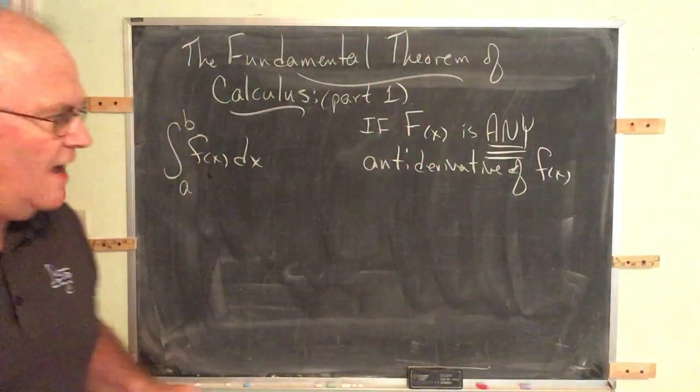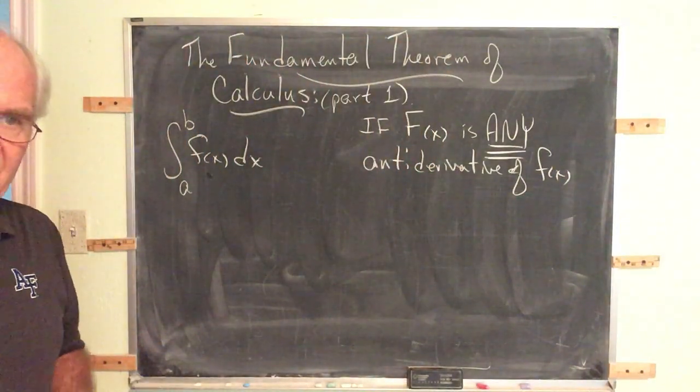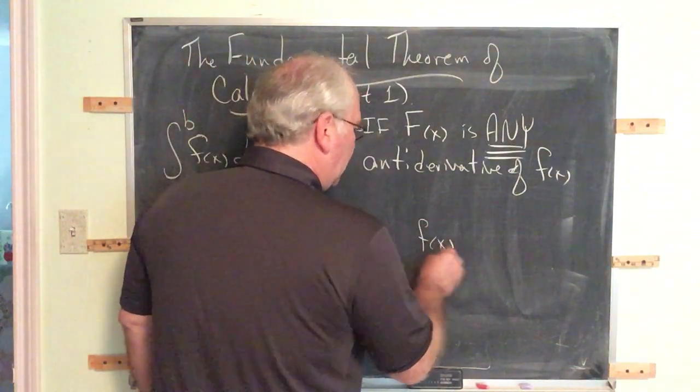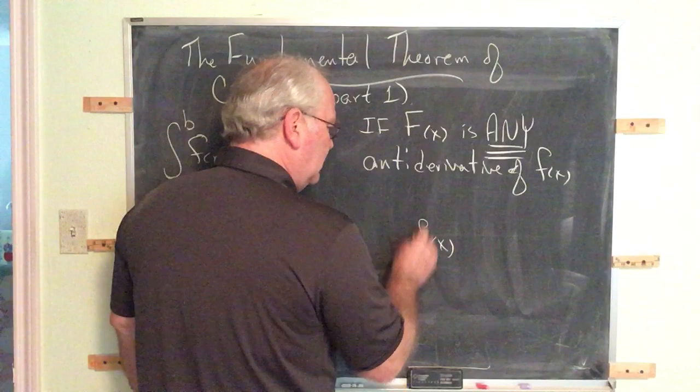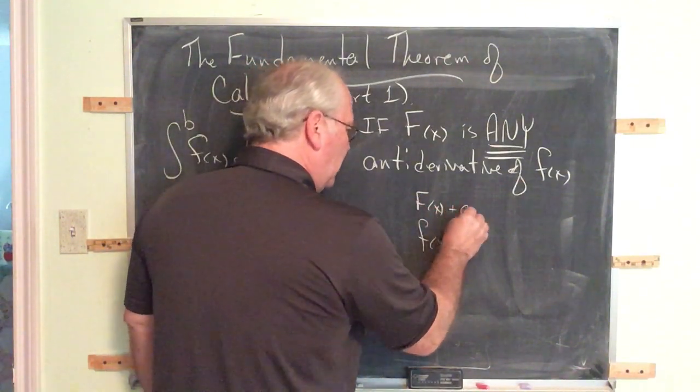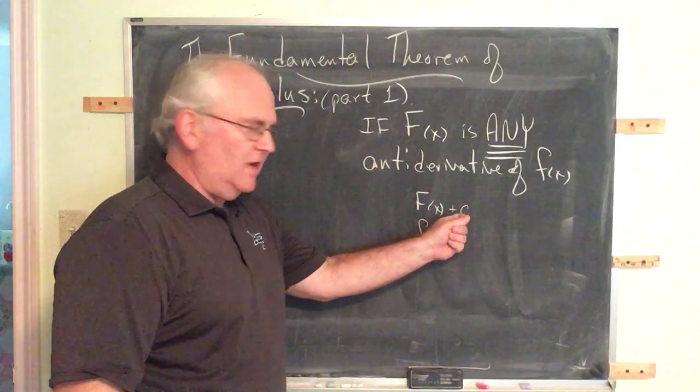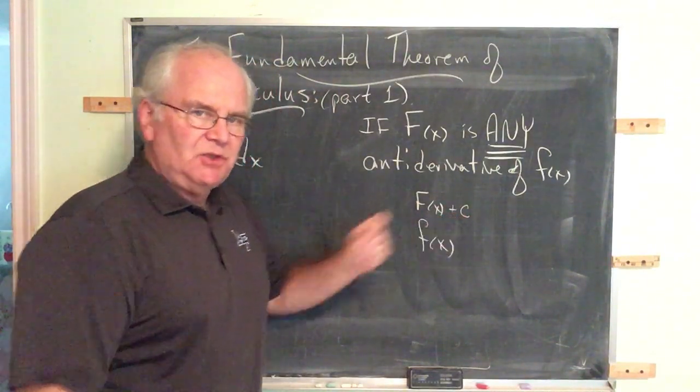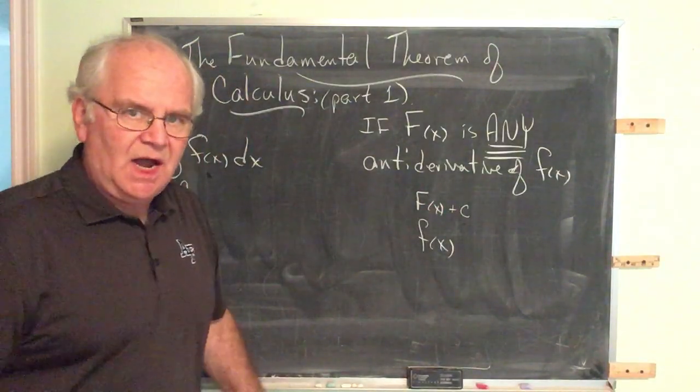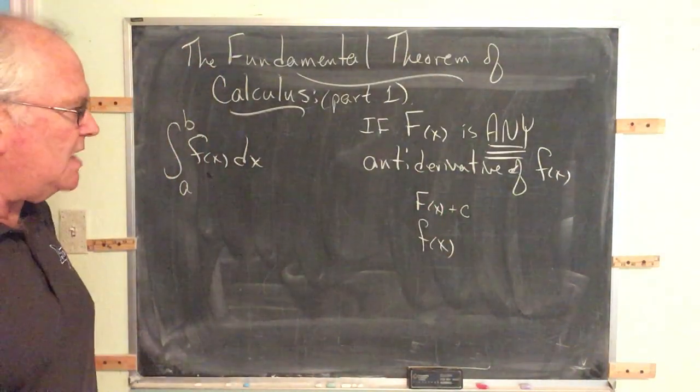Remember that little f of x has an infinite number of antiderivatives, because when we find the antiderivative of little f is cap F of x, that's the symbol, but remember, we always add the constant of integration. So depending upon the choice of the constant, different people doing the same computation might get different constants, or you're allowed to use different constants.